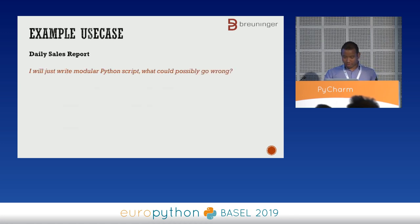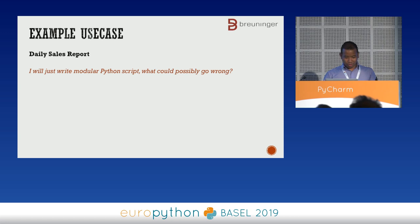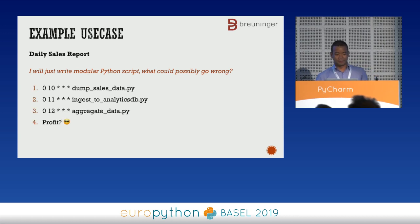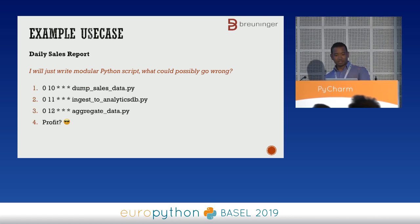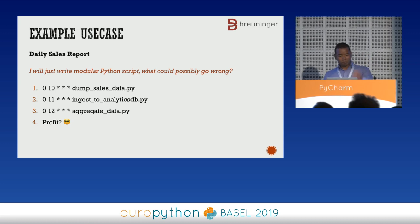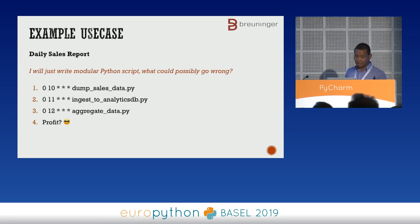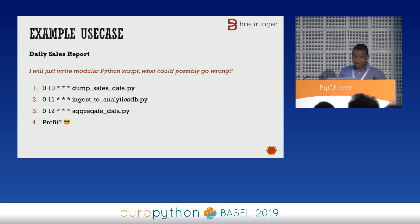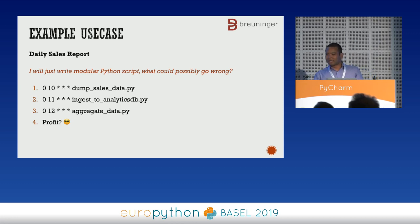Since we're at a Python conference and you're all great Python developers, you wrote an awesome Python script and scheduled it using cron. So: dump sales data, ingest to analytics database, aggregate data, and profit. It looks pretty great — it runs, it works.